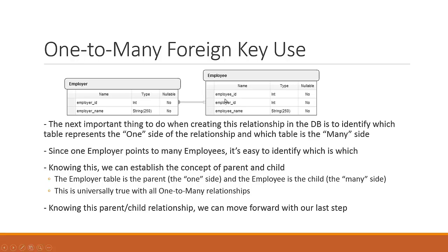It's very important to understand how this relationship works. The foreign key — employer ID — exists in the child table as a separate entity to the table's primary key. The employee table has its own employee ID, but it also holds the employer ID. When we later talk about the one-to-one relationship, these two keys are actually going to be combined into one key. But this is the specific way to create a one-to-many relationship.